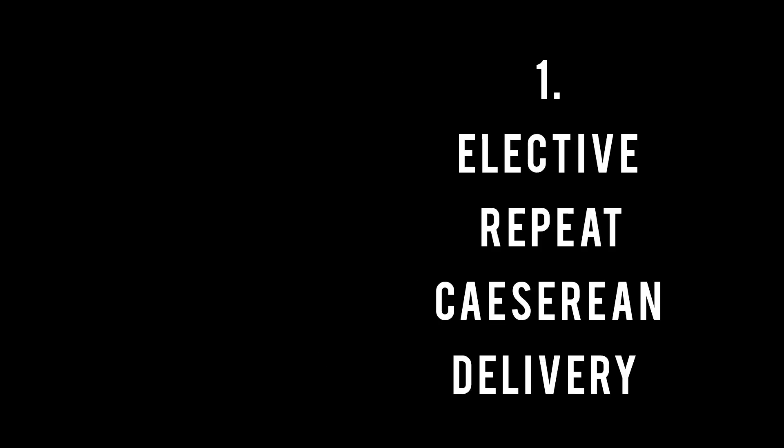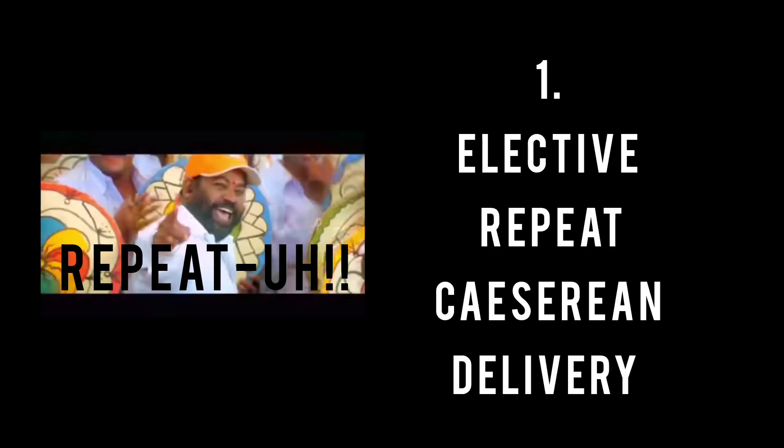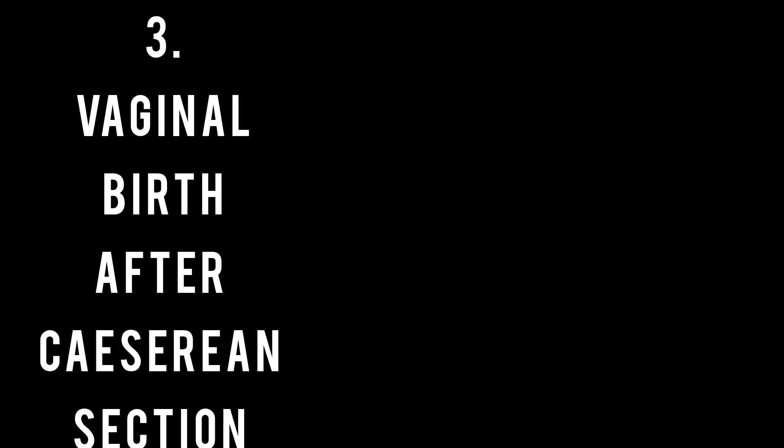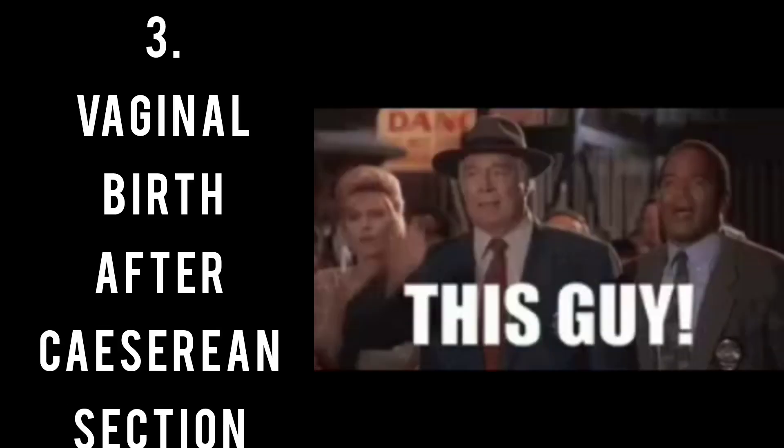We have three approaches for women who have undergone a previous cesarean section. The first is ERCD, that is elective repeat cesarean delivery. The second is TOLAC, which stands for trial of labor after cesarean, and the last is VBAC, which is vaginal birth after a cesarean section.